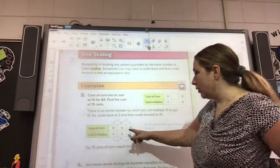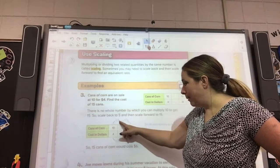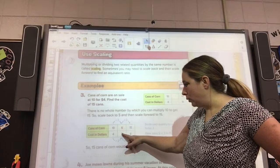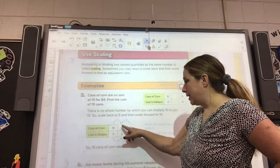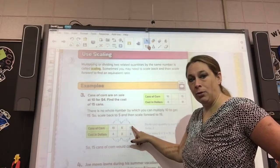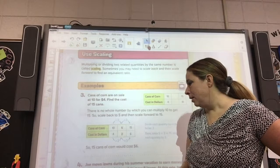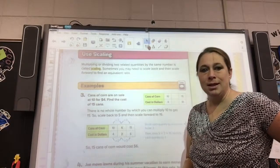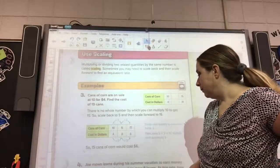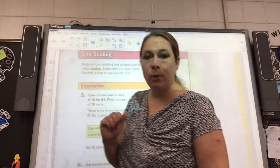And as you see down below, they decided they were going to divide both those numbers by 2. So 10 divided by 2 is 5. 4 divided by 2 is 2. And then they said, well, how would I get from 5 to 15? Multiply by 3. What you do on the top, you've got to do on the bottom. 2 times 3 is 6. So 15 cans would cost $6. Okay? We're going to be doing some practice at this. This is a really good example to get you started with.